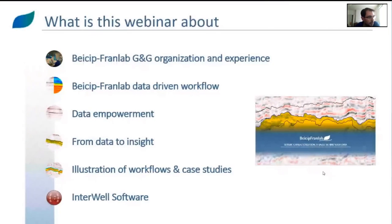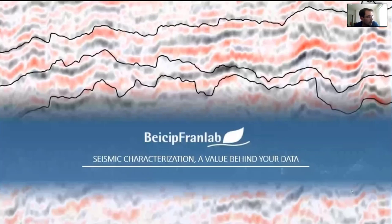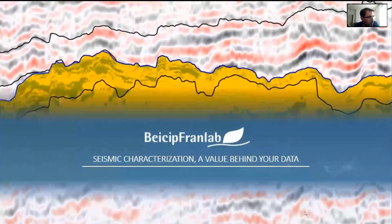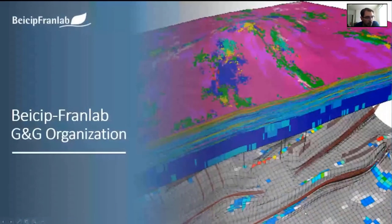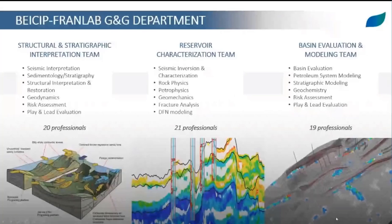We're going to introduce you first to the BeFront Labs organization, in particular the G&G department — namely geology and geophysics. We are organized in three teams: the structural and stratigraphic interpretation team, the reservoir characterization team, and the basin evaluation and modeling team, in order to allow for efficient integration between all the different disciplines during all our project execution.